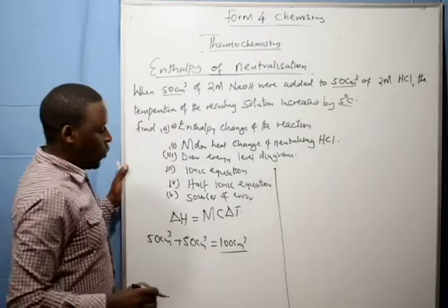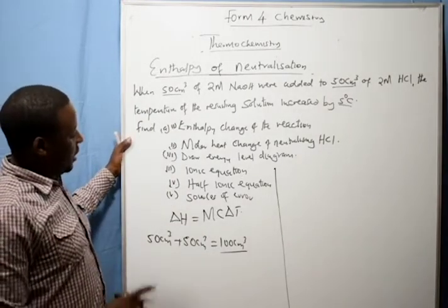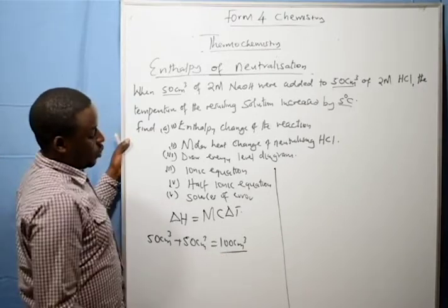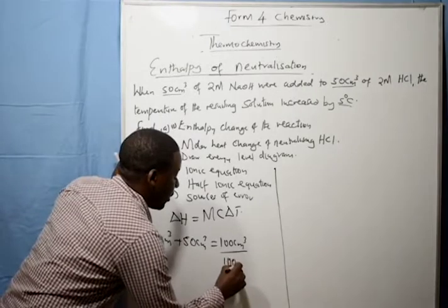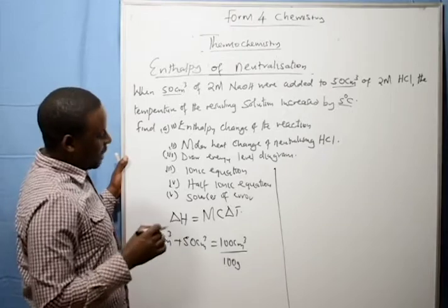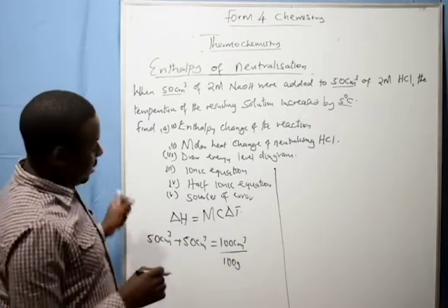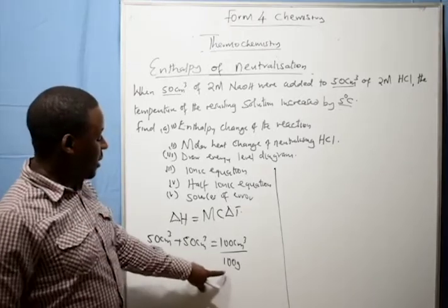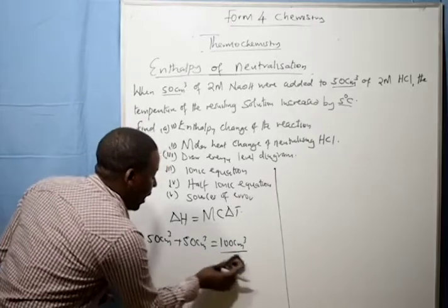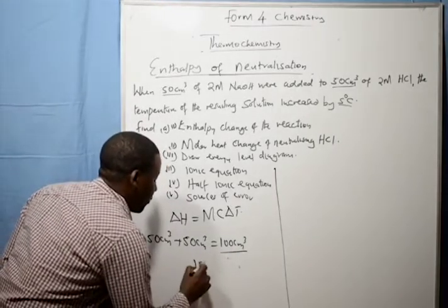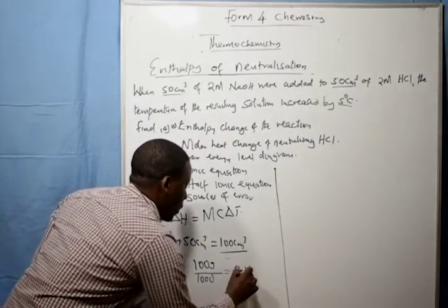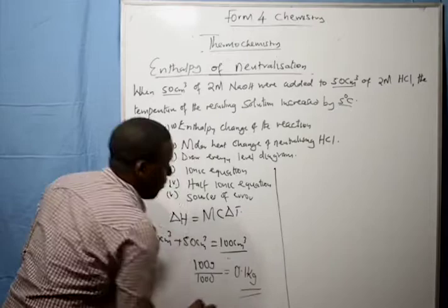Now knowing that the density of the mixture is 1 gram per cubic centimeter, the mass of this solution becomes 100 grams. Our capacity shall be given in kilograms, therefore we convert these grams into kilograms by dividing 100 grams by 1000. We make them 0.1 kilograms. So the mass of our solution is 0.1 kilograms.